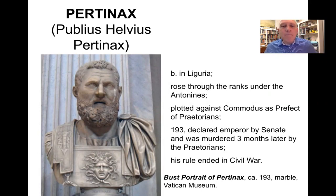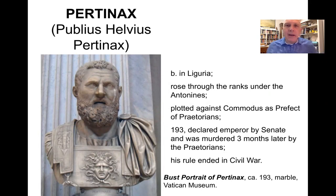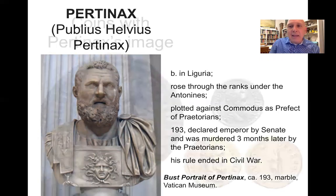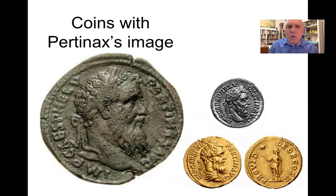Pertinax was among those praetorians who plotted against Commodus and ultimately brought about his demise. In 193 he becomes emperor, declared emperor by the Senate. Unfortunately he was murdered by the Praetorian Guard that was supposed to protect him. Pertinax had a very short rule of three months, and his death ended in a great civil war.